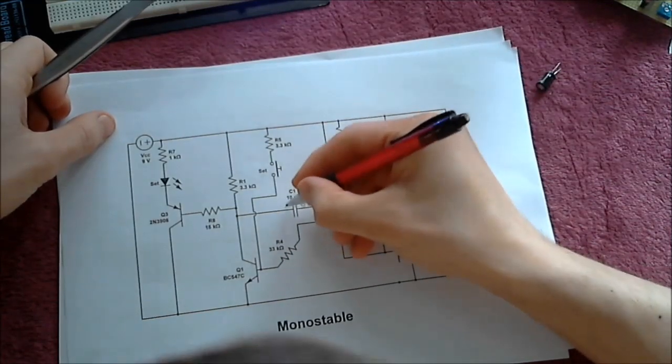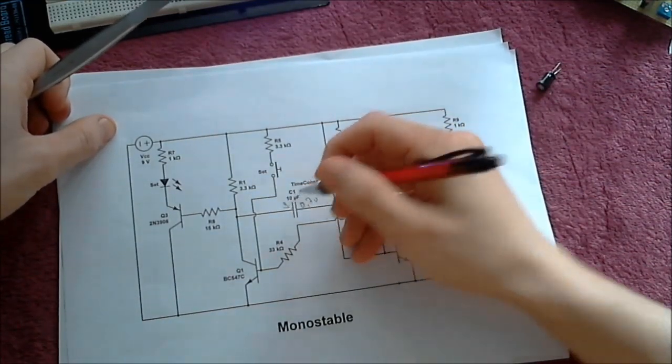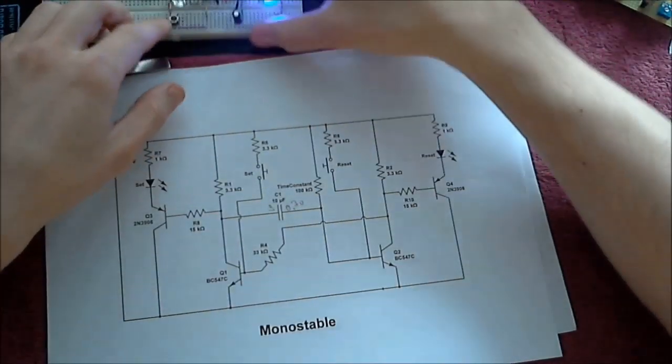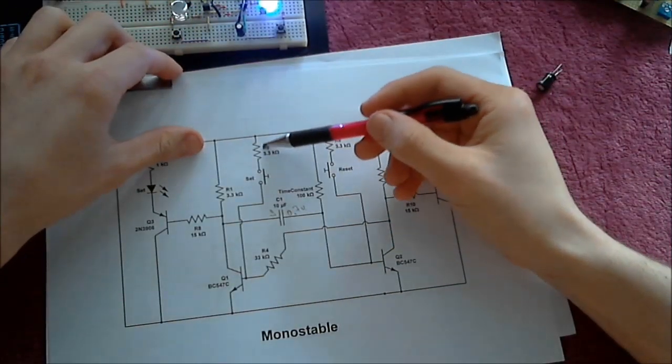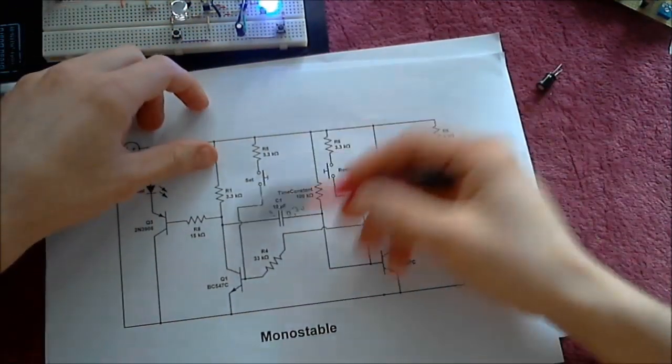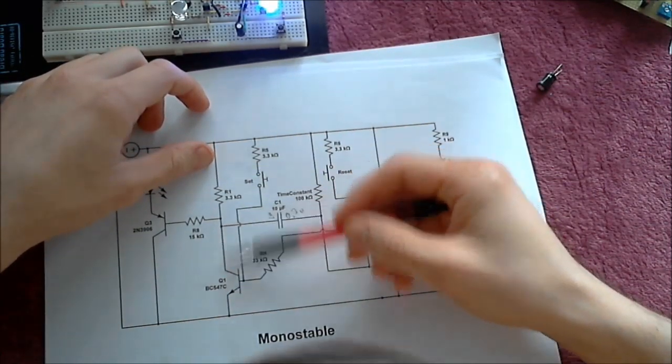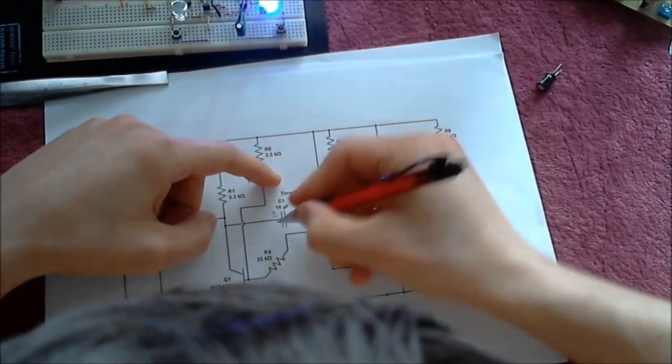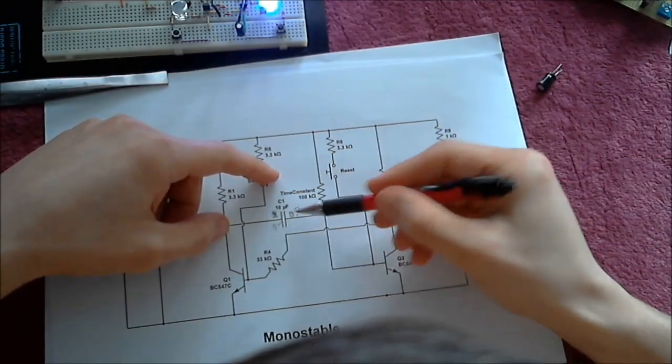This part is going to be at almost 9 volts, this side of the capacitor. Now what happens if I press the push switch? If I press the push switch, then I supply a lot of current to the base which turns this transistor on.